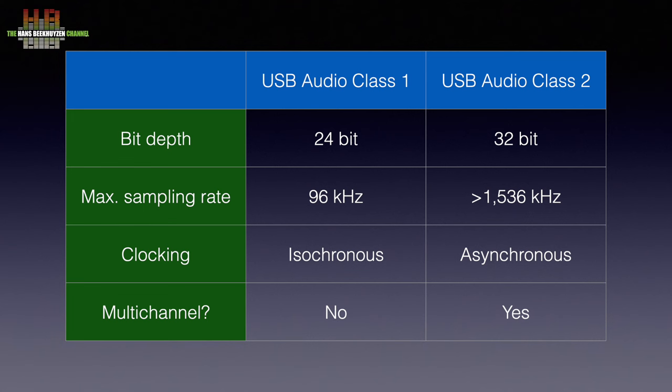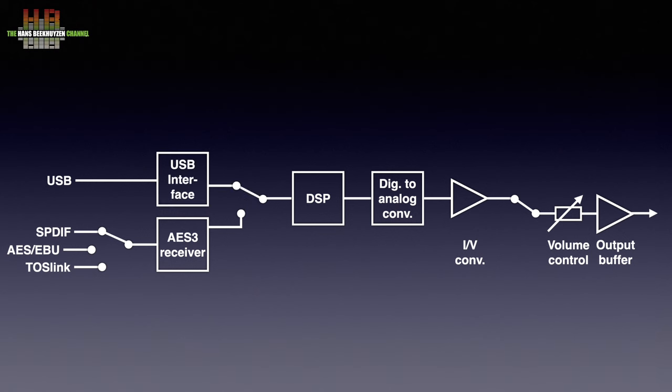Nowadays USB audio class 2 is supported by all operating systems, but computers running early Windows 10 and before need a separately installed driver to function. Older computers — pre-2010 — might not have hardware to support USB audio class 2. These use the now-called USB audio class 1 standard that does 24-bit and 96 kHz at best. It also uses an isochronous protocol, meaning the computer clocks the DAC, which isn't that good. USB audio class 2 uses an asynchronous protocol, leaving the clock to the DAC. In both cases a USB interface chip is needed to translate the USB signal to I2S, and a switch at the input of the DSP circuit lets you switch between the AES-3 receiver output and the USB interface.